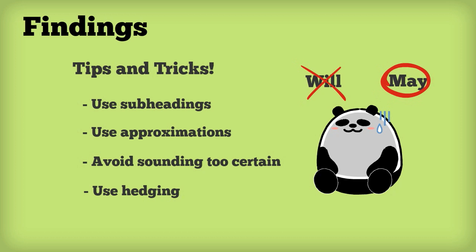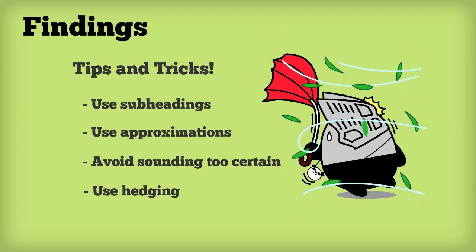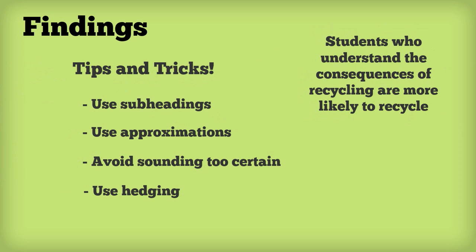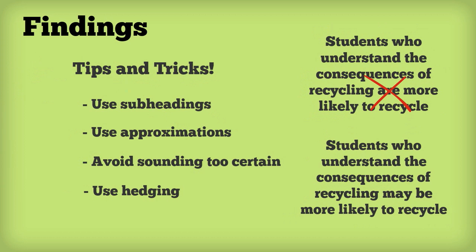So it's always a good idea to show our readers that we know we could be wrong. As another example, instead of saying 'students who understand the consequences of recycling are more likely to recycle', we could hedge by saying 'students who understand the consequences of recycling may be more likely to recycle'.